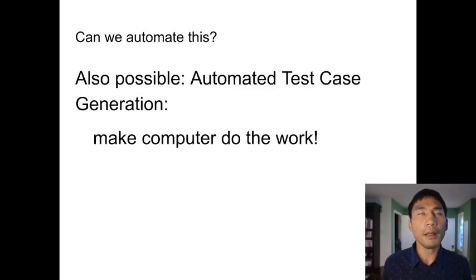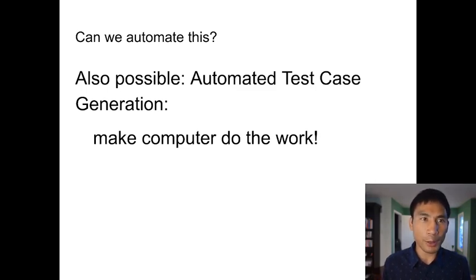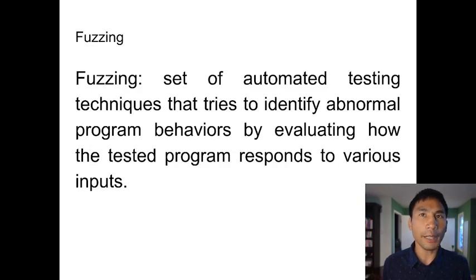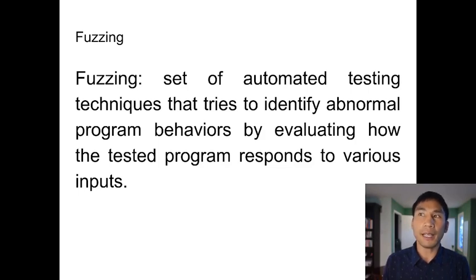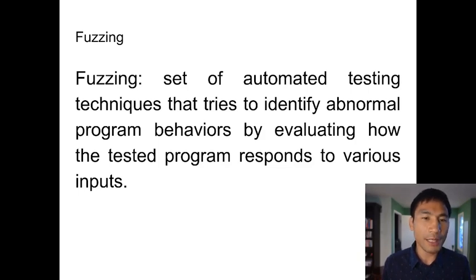We won't talk too much about why this doesn't work well all the time, but it does work pretty well for finding certain kinds of things. The approach we're going to use is fuzzing — a set of automated testing techniques that tries to identify abnormal program behaviors by evaluating how a test program responds to certain inputs. It doesn't really know which inputs are important, so it's basically going to try randomly to find good inputs, using feedback to do so.